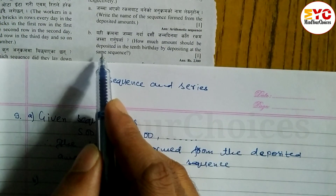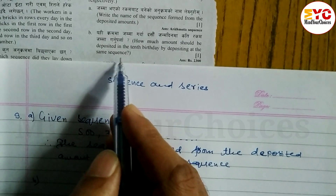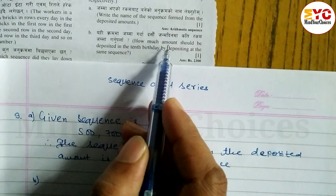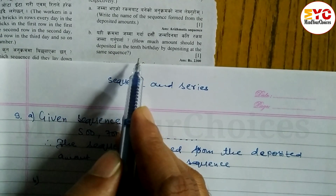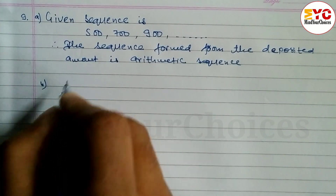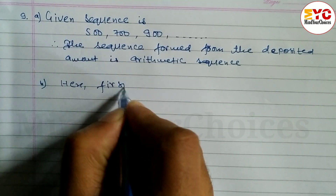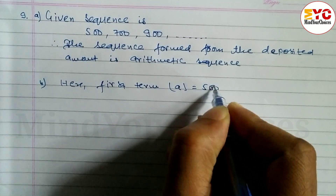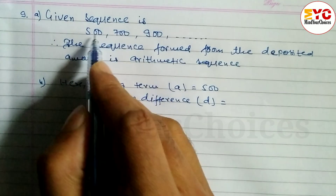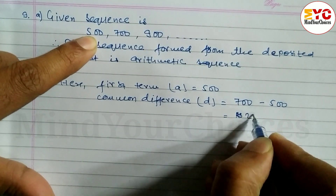How much amount should be deposited on the tenth birthday? We need to find T10. First term A is equal to 500. Common difference D is equal to T2 minus T1, which is 700 minus 500, giving us rupees 200. Number of terms N is equal to 10.